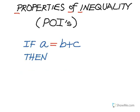The second property of inequality is that a sum is greater than any of its parts. So if A is composed of B and C — if it's the sum of B and C — then obviously A has to be greater than B, and A has to be greater than C. Again, logic.